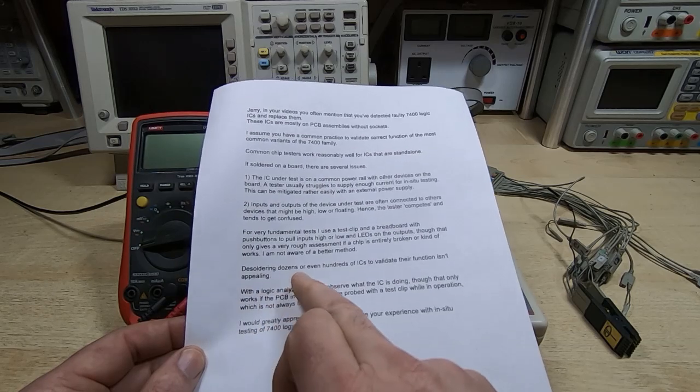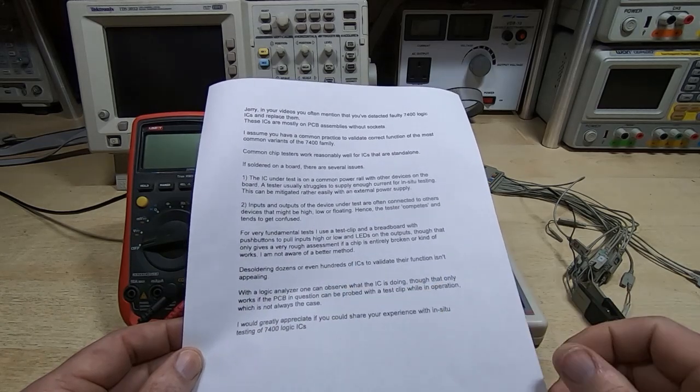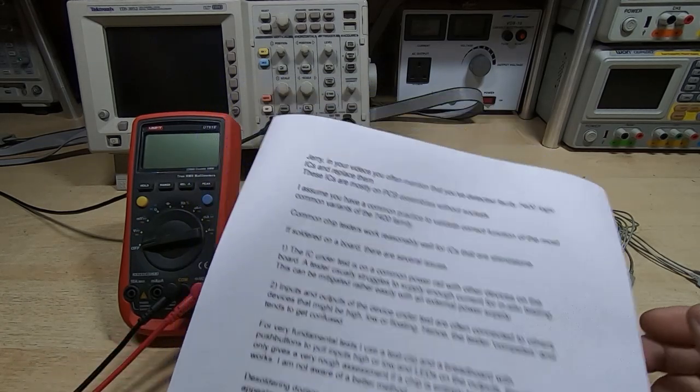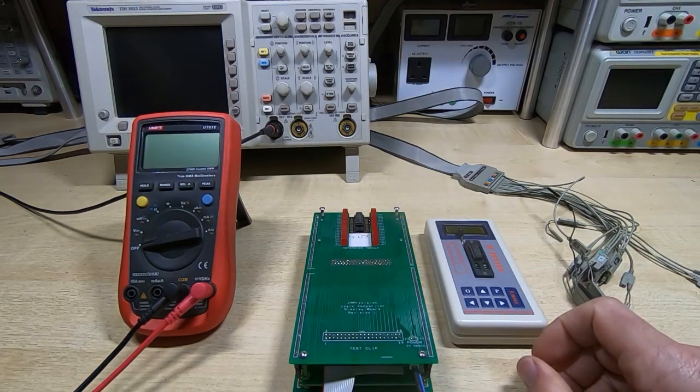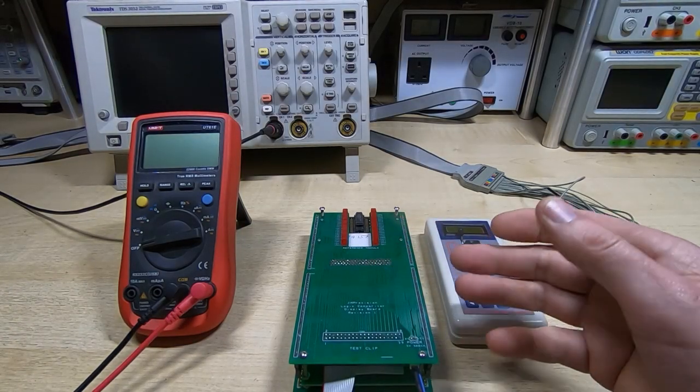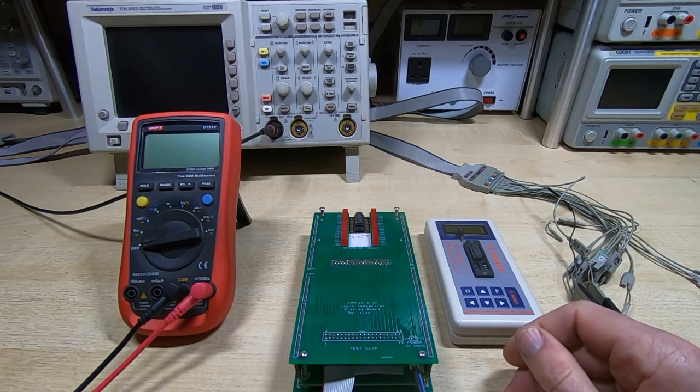In fact, I quite rarely only use this just to confirm my suspicion that the device I've removed is in fact the faulty device, which is one of the reasons I'm careful when I desolder devices, even if I suspect they've failed. So the next point is desoldering dozens or hundreds of ICs to validate their function isn't appealing. Absolutely not. And that's absolutely not what I would do. I don't. That's really just called guessing. It's not the approach I take.